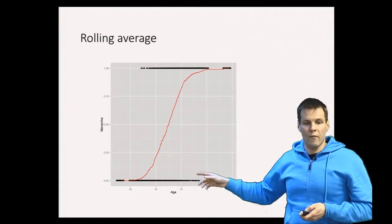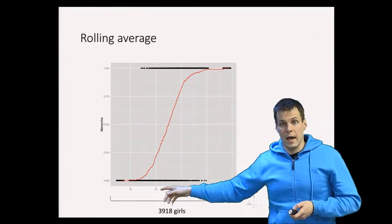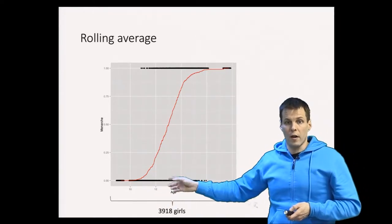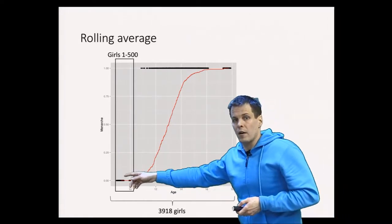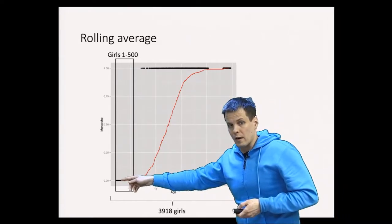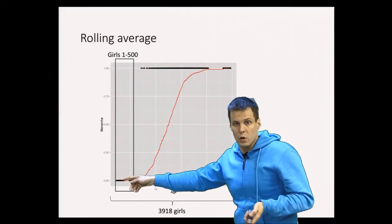The idea of rolling average is that we have here about 4,000 girls, and then we take the first 500 here. We calculate the mean for these first 500 and then mark a small dot here. The average for these girls is zero because no one has had menarche.